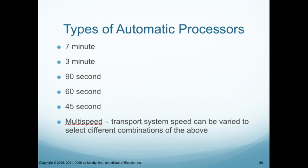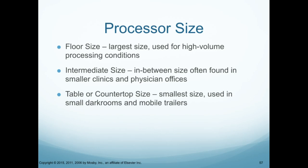Types of automatic processors include the 7-minute, 3-minute, 90-second (which is the most common), 60-second, 45-second, and a multi-speed transport system that can be varied and selected to different combinations of those times. Processor sizes include floor size, the largest, used for high-volume processing in hospital situations; intermittent size, an in-between size often found in smaller clinics and physician offices; and table or countertop size, which you would see in a smaller clinic, small dark rooms, and mobile trailers.